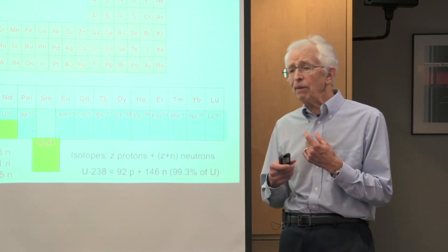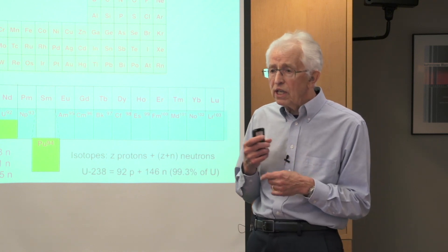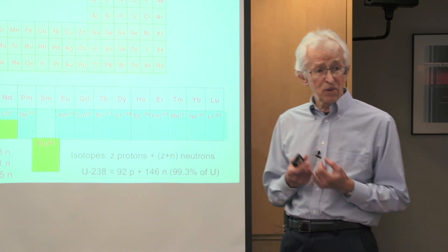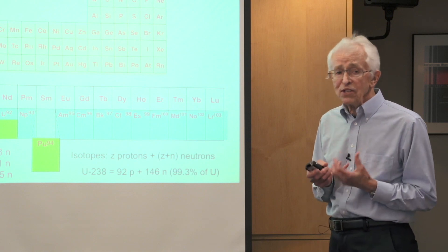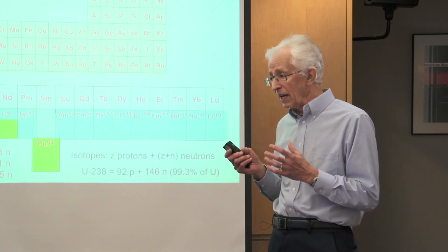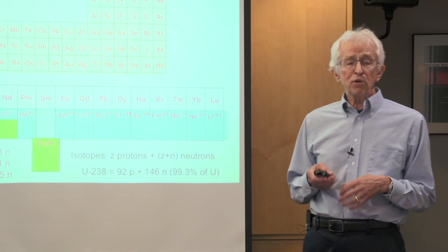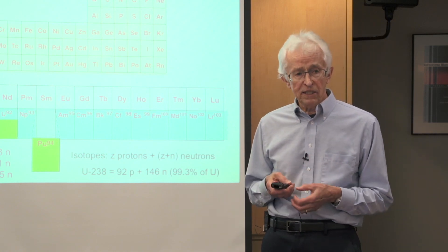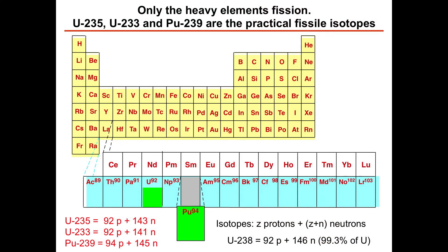Just to give you a little more of the science you need to understand about nuclear fission: where does this stuff come from? Looking at the periodic table, the only practical fissionable materials are uranium — specifically the isotopes uranium-235 and uranium-233 — and plutonium, where the isotope of choice is plutonium-239. These occur way down at the bottom of the periodic table.